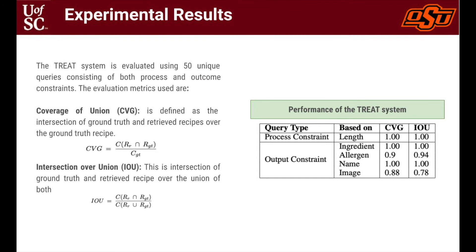Moving on to the experimental results, the Treat system is evaluated using 50 unique queries consisting of both process and outcome constraints. The evaluation metrics used are coverage of union and intersection over union. Coverage of union is defined as the intersection of ground truth and retrieved recipes over the ground truth recipe, and intersection over union is defined as the intersection of both over the union of both. In both these equations, RR and RGT refer to the set of retrieved recipes and ground truth recipes for a given query respectively, and C represents the length of the set of recipes. The system reports a performance of more than 80% in both the metrics for process as well as output constraint type queries.